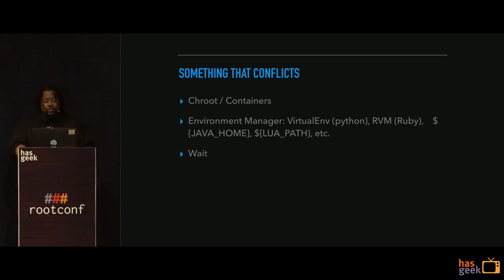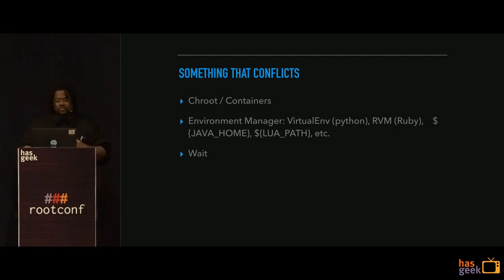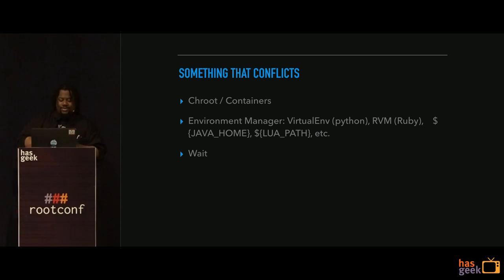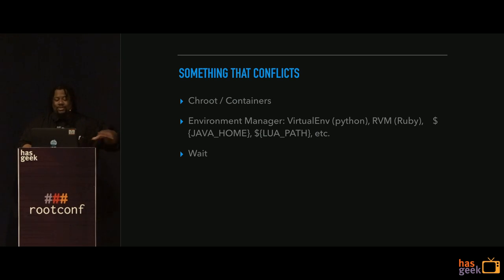So one way to deal with that is with true jails or containers — Linux containers, jails, Solaris zones — or environment management. Something like virtualenv on Python, or if you're using a Java app, setting the Java home. Lua apps can use Lua path. These let you set a narrow focus for your application to find the tools it needs. Alternatively, you can just wait and hope that whatever tool you need becomes the prevalent tool for your distribution or operating system.